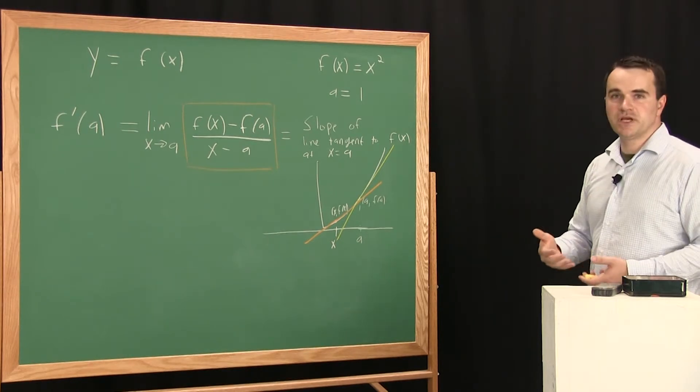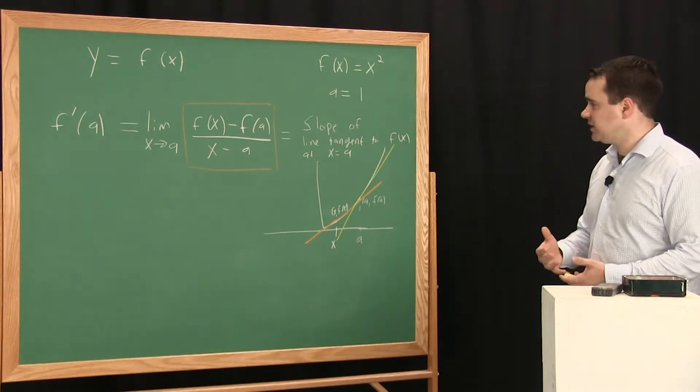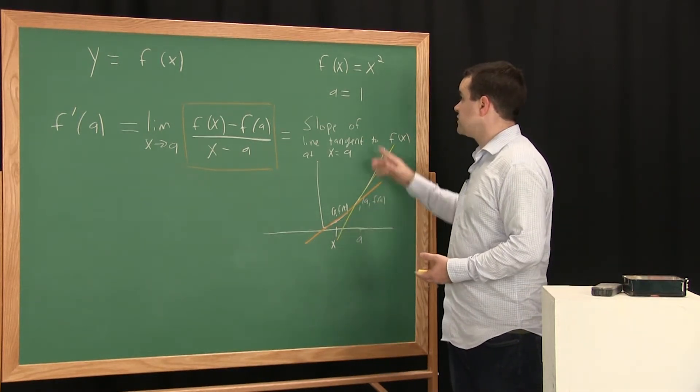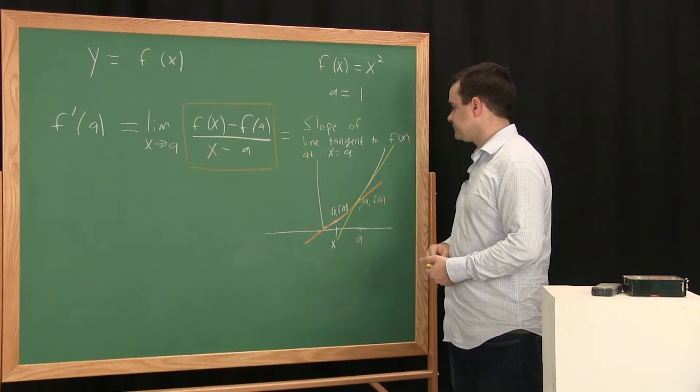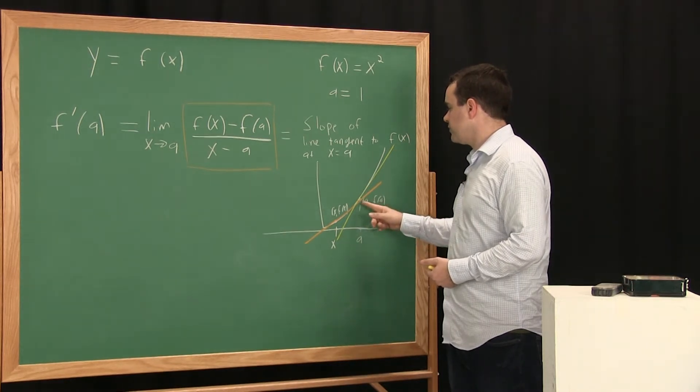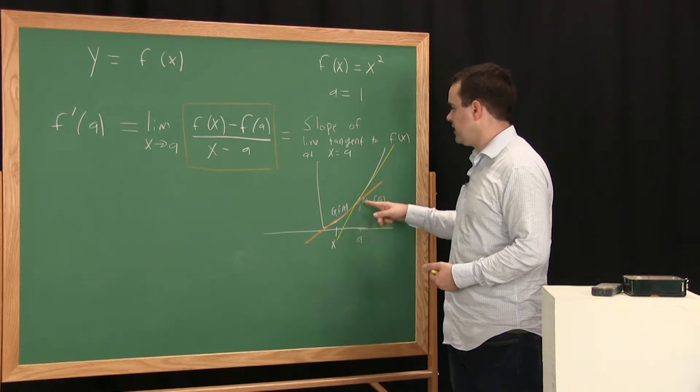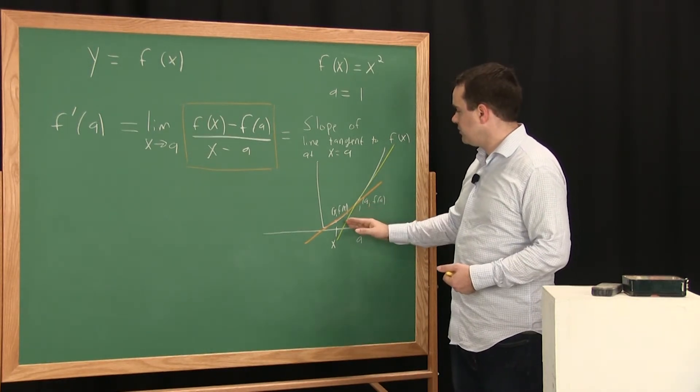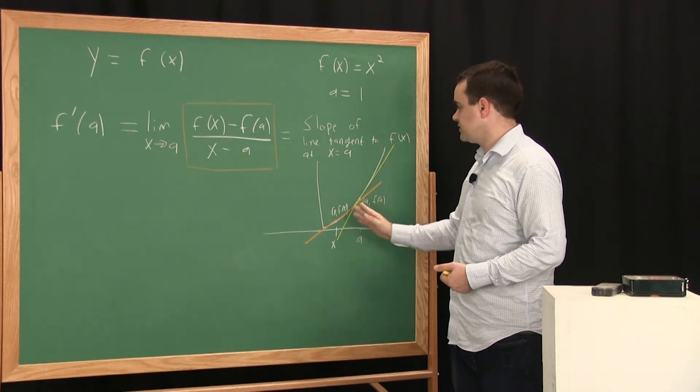And so what this is telling you intuitively is that you take any function you want, say x squared, and through the point that you picked on the graph, a f of a, you're looking for the line that best approximates the function.